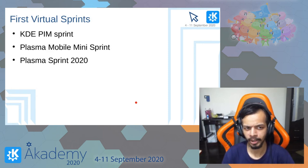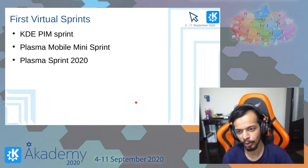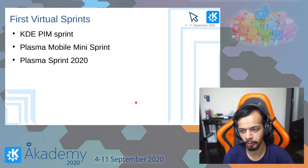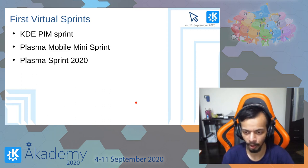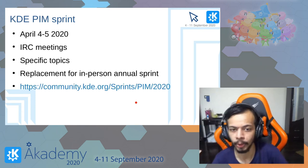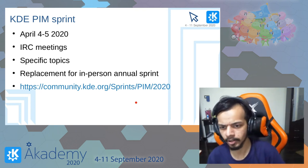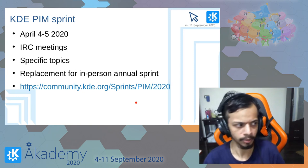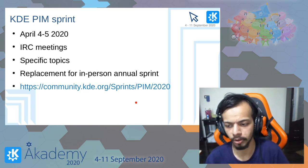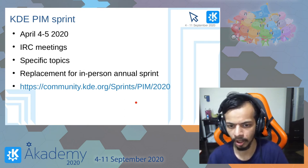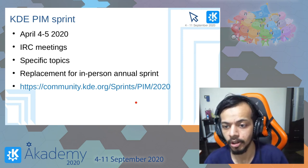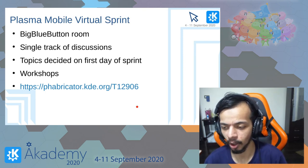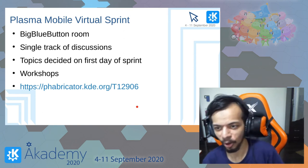So far, three different sprints happened that were fully virtual. One is the GNOME/Gitea BEAM sprint, another is the Plasma Mobile mini sprint, and then there is the Plasma sprint. The BEAM sprint was for one weekend, fully IRC meetings, with very specific topics decided beforehand. It was a replacement for their annual in-person sprint.